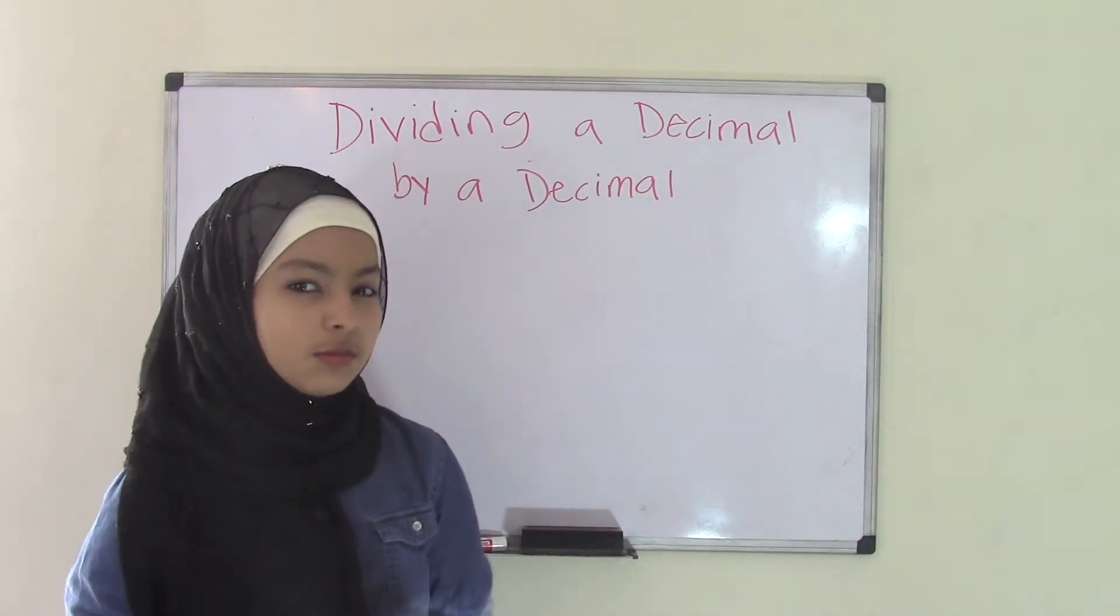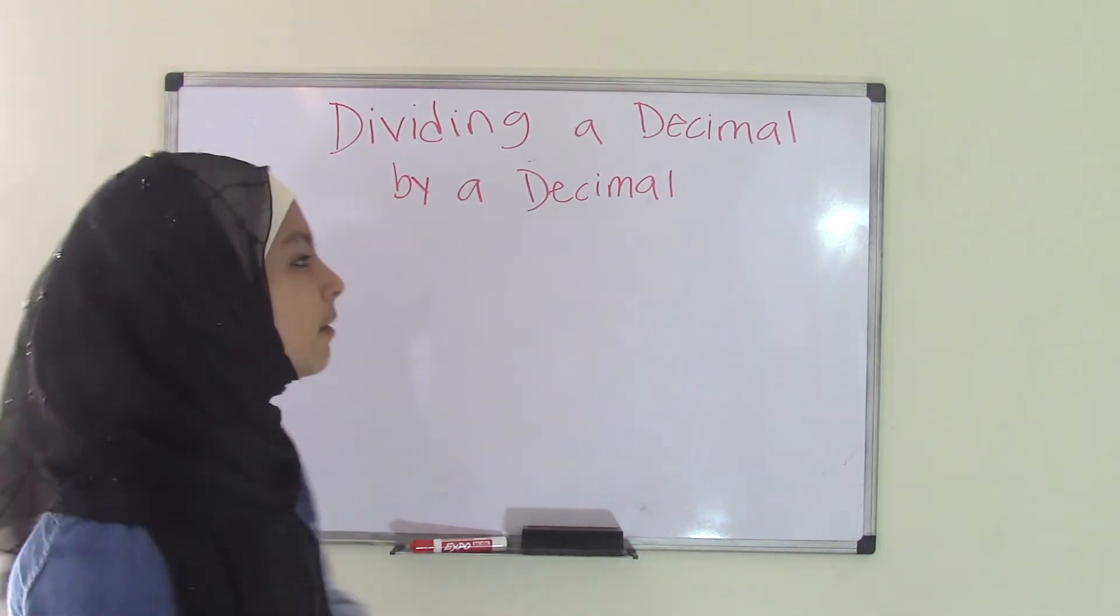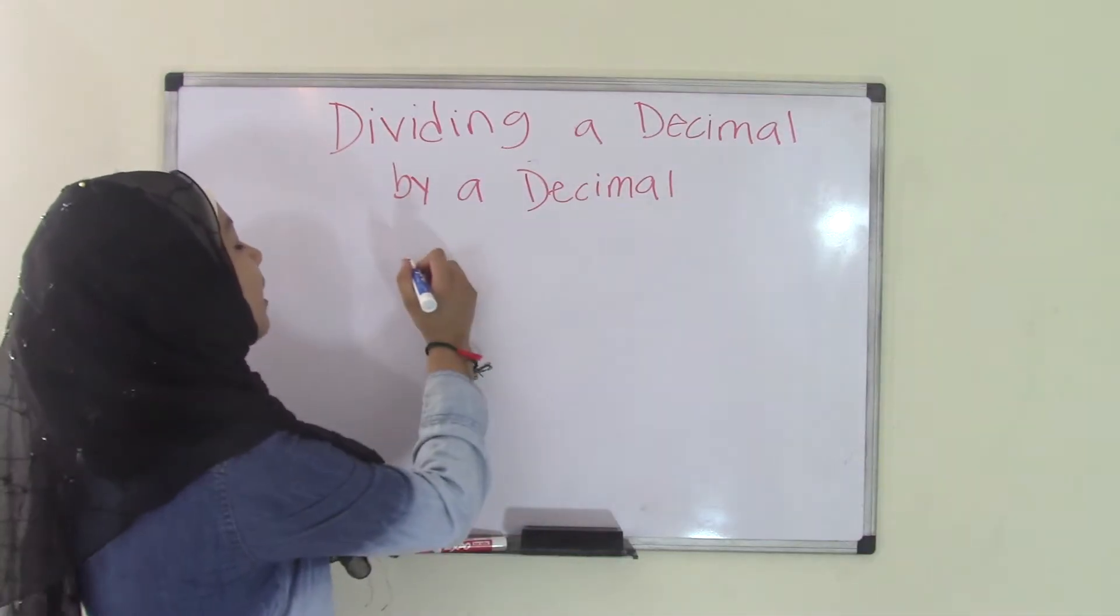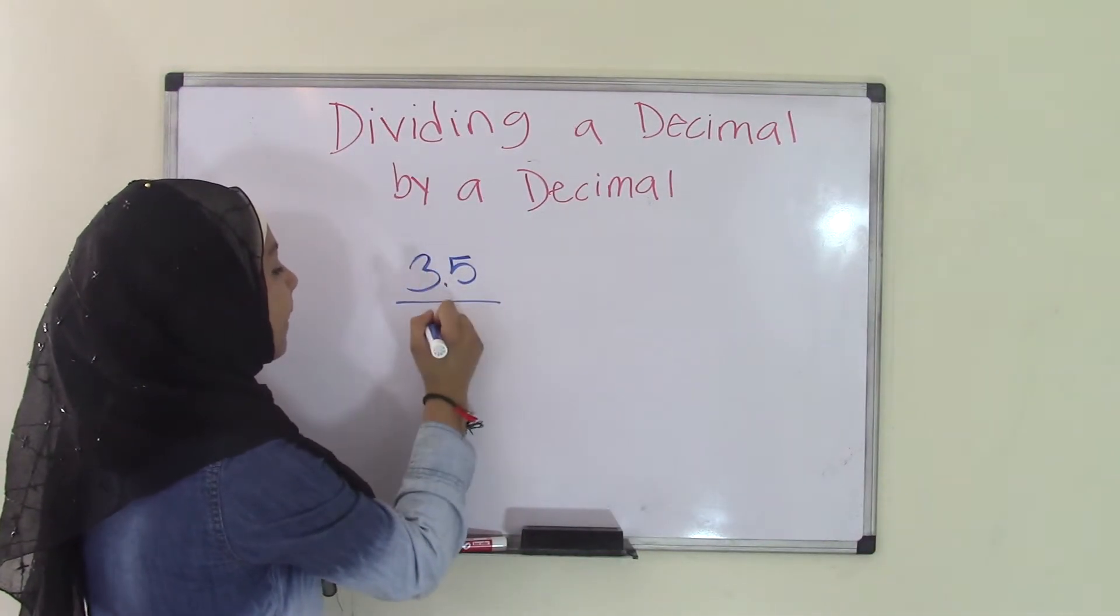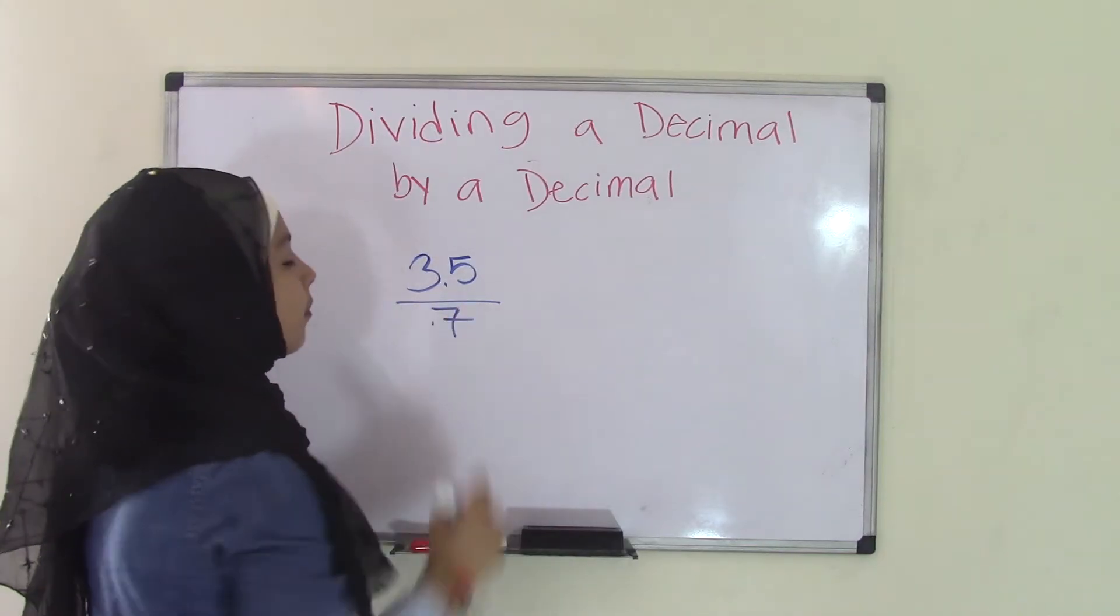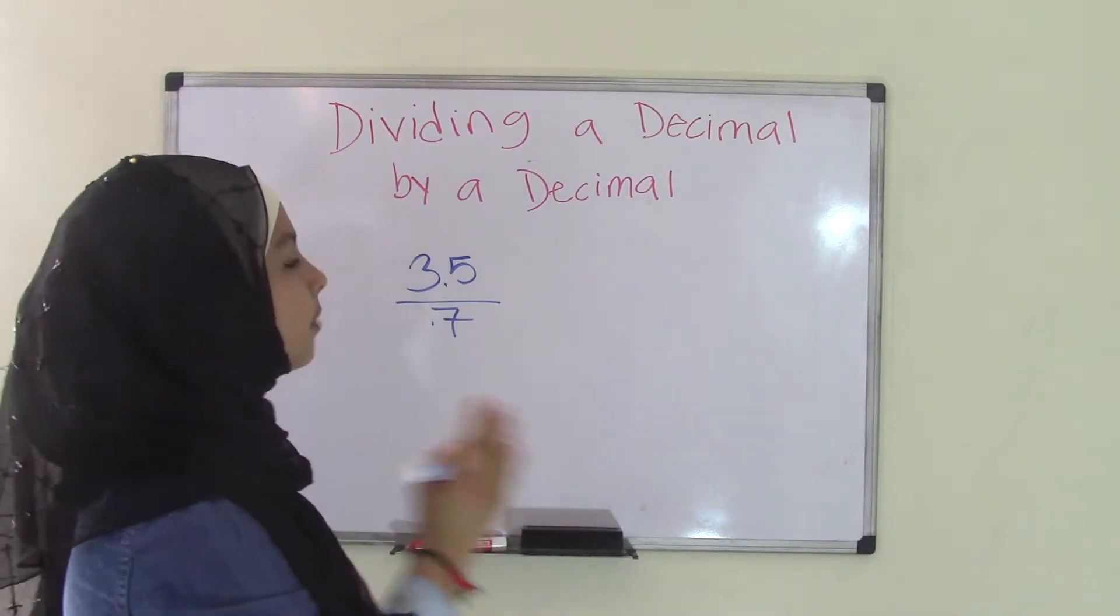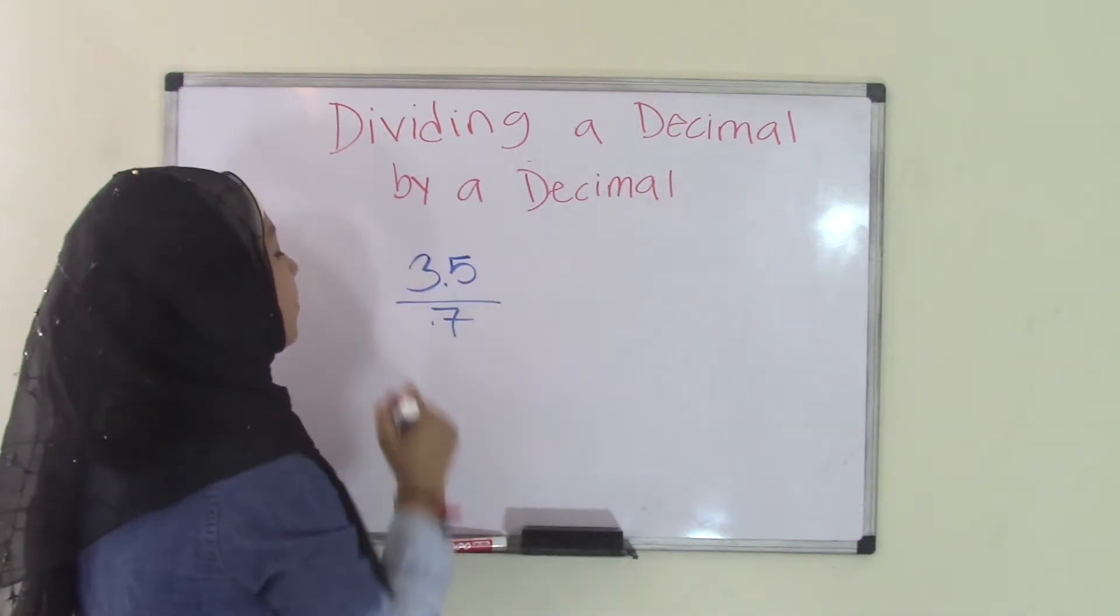But this time you're dealing with decimals. Maybe we have a problem, let's say 3.5 divided by 0.7. We're going to start off with an easy problem. So we have 3.5 divided by 0.7.